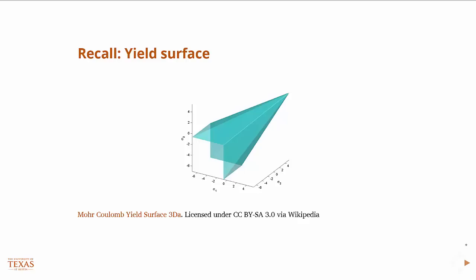So we're still talking about constitutive modeling of geomaterials, and if you remember a few classes ago, we had this picture of a yield surface for a Mohr-Coulomb model, a commonly used model.